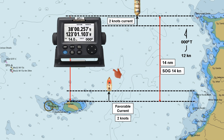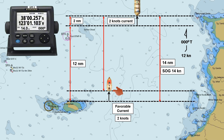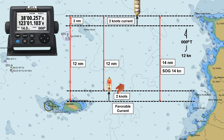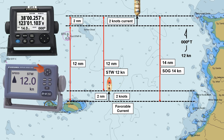However, the parallel distance traveled relative to the floating boat remains 12 nautical miles. This is because the floating boat, influenced by the 2-knot current, also moves 2 nautical miles. Since we are using the boat as our reference point to determine speed through water, the speed through water is 12 knots. Therefore, the Doppler speed log displayed a speed through water of 12 knots.